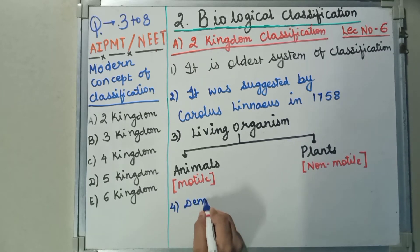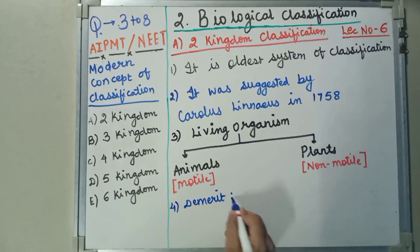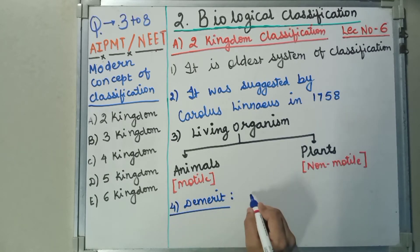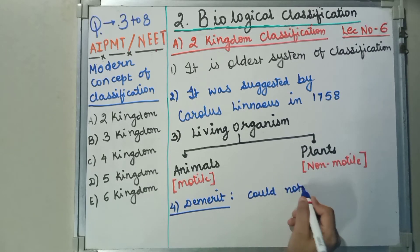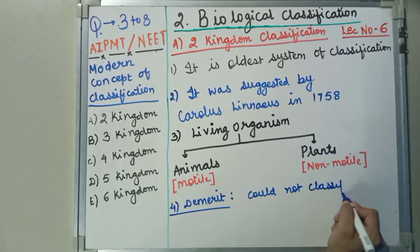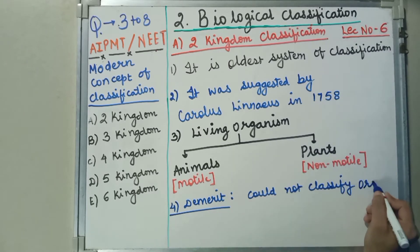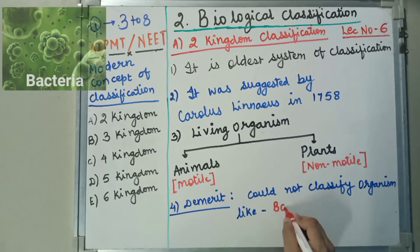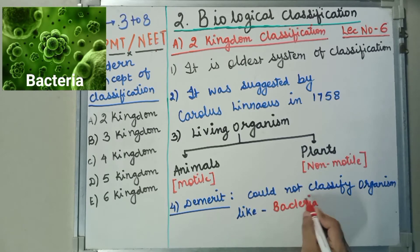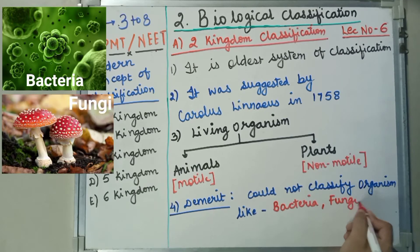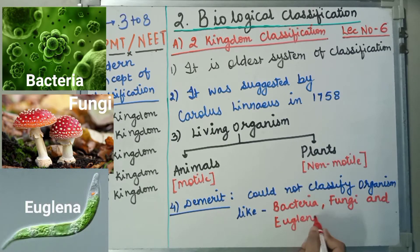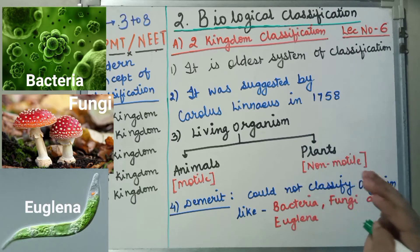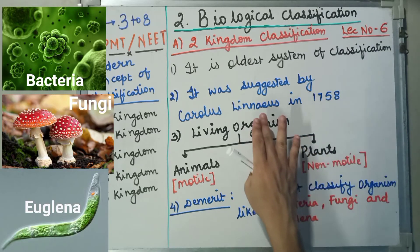The demerits are that it could not classify organisms like bacteria, fungi, and Euglena. So this was the simplest classification given by Carolus Linnaeus.